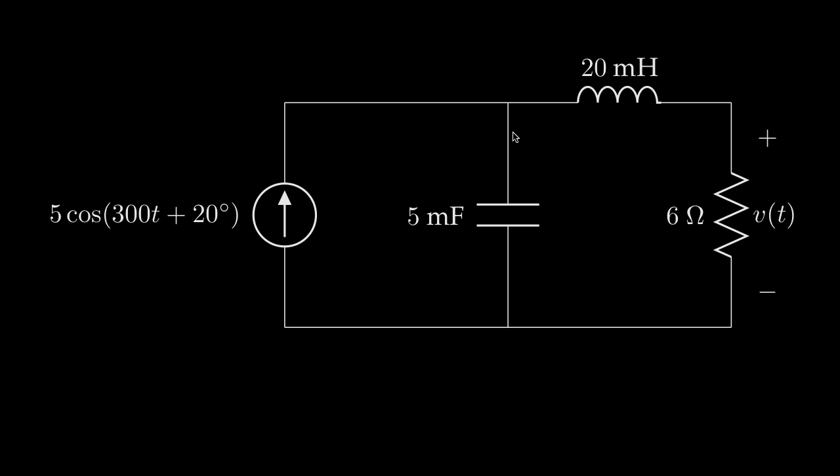The current is split between two parallel paths. One path contains a 5 millifarad capacitor and the other path contains a 20 millihenry inductor and a 6 ohm resistor. The objective for our analysis is to determine the voltage across the 6 ohm resistor, and the first step in our analysis is to identify the frequency for the sinusoidal source.